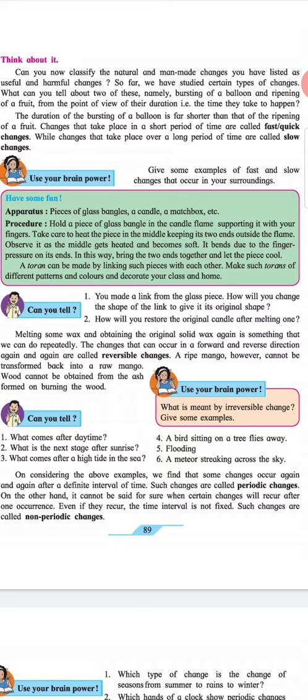Observe it as the middle gets heated and becomes soft. It bends due to the finger pressure on its end. In this way, bring the two ends together and let the piece cool. A torrent can be made by linking such pieces with each other. Make such torrents of different pattern and colors and decorate your class and home.